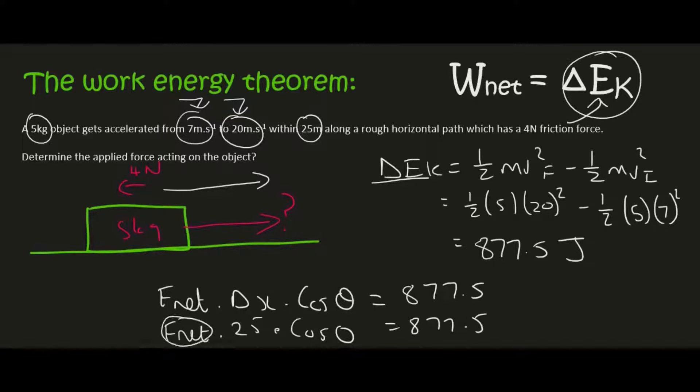And so you could work out F_net by simply saying 877.5 divided by 25 times cos 0. And therefore F_net is going to be 35.1 newtons. And that's acting to the right.